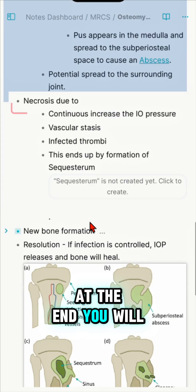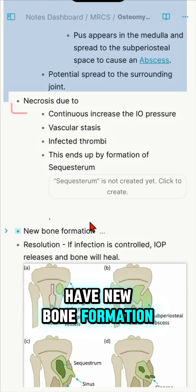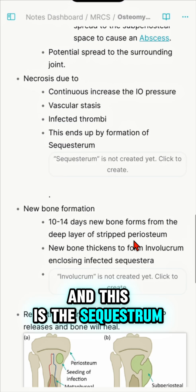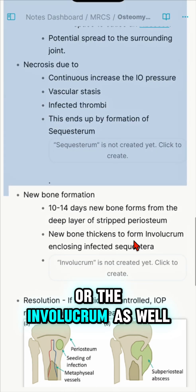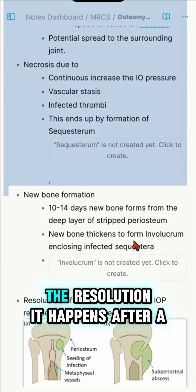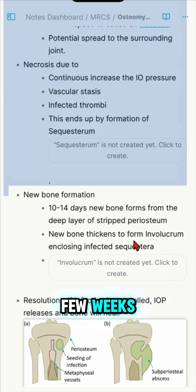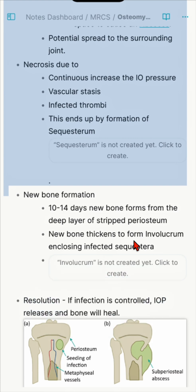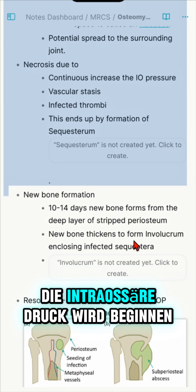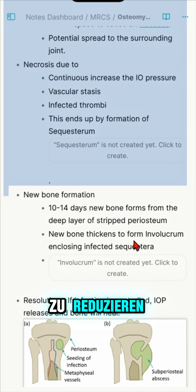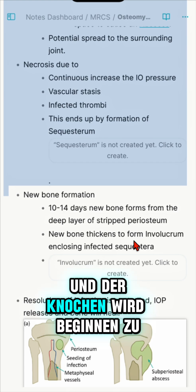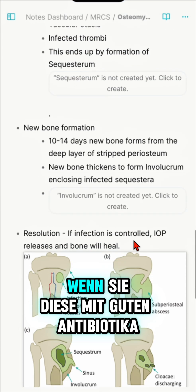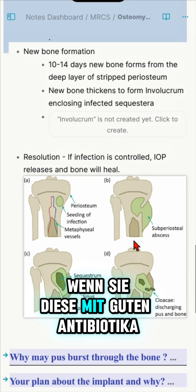At this stage, new bone formation occurs, referred to as the sequestrum or involucrum. Resolution happens after a few weeks if the infection is well controlled with antibiotics or surgical management — the intraosseous pressure will start to reduce and the bone will begin to heal again.